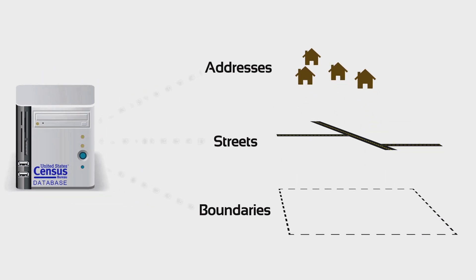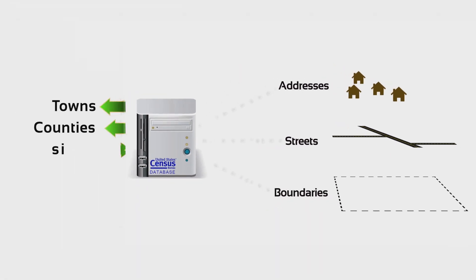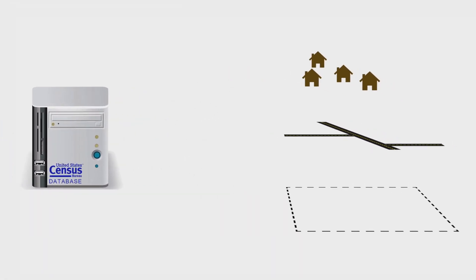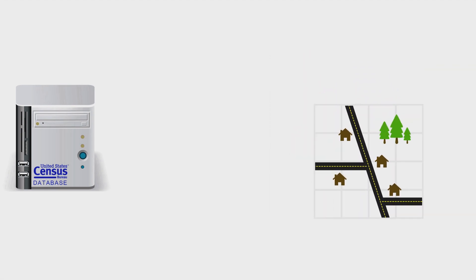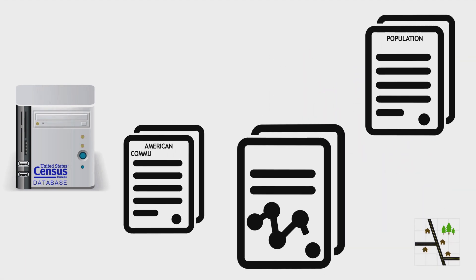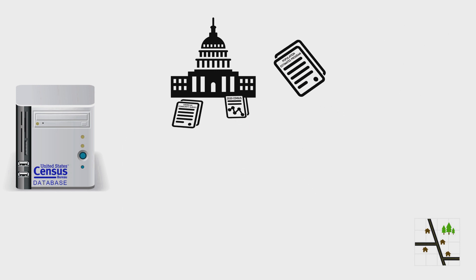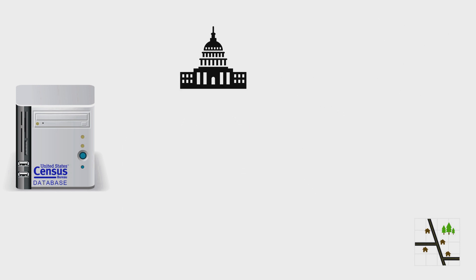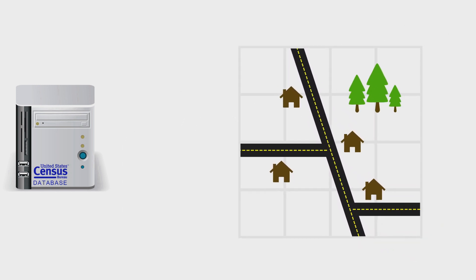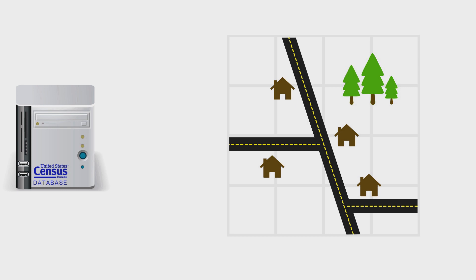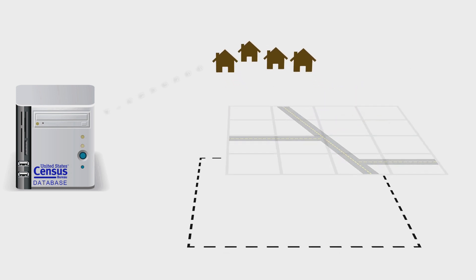It's used to tie demographic data from censuses and surveys to towns, counties, school districts, states, and more. The Census Bureau uses geographic data to publish demographic data about communities — information to better inform decision makers. But how do boundaries, streets, and addresses determine how the Census Bureau counts people in your community?